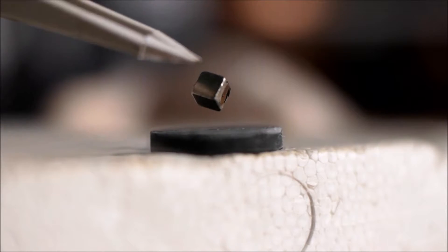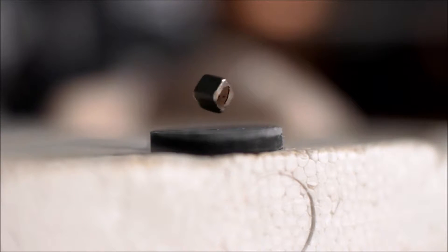Because the superconductor has zero resistance, the induced currents can respond instantly to any change in the position of the magnet and oppose any changing magnetic flux. Even if I spin the magnet, the induced currents will respond to levitate the magnet above it.